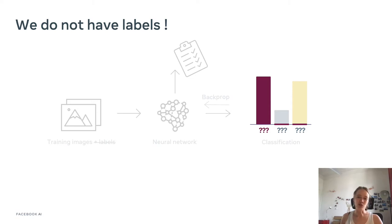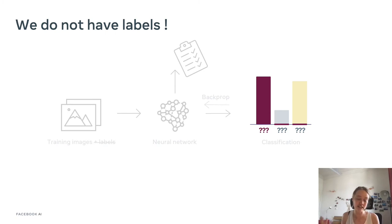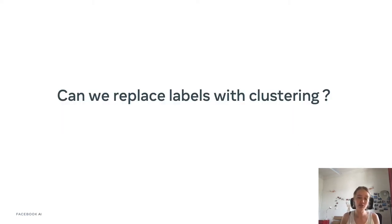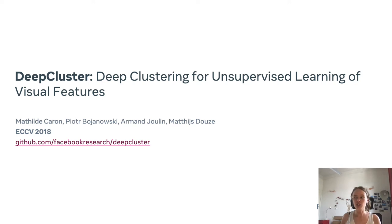In our case, we do not have labels. Our motivation is to try to mimic this label classification process but adapt it to the case where we don't have labels. The labels in a dataset can be seen as a partitioning — a clustering of the images into their associated clusters, which are the classes they belong to. So we ask: can we find a clustering of our own that could replace the annotations? That's the question we address in DeepCluster, presented at ECCV in 2018.